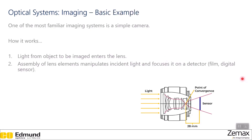A basic example of an imaging system is a camera. Light enters from the object to be imaged into the lens. As shown in the image, light indicated by the red arrows passes into the camera, where it is manipulated by lenses forming a lens assembly. This assembly of lens elements manipulates incident light and focuses it on the detector, which is located at the back of the camera.